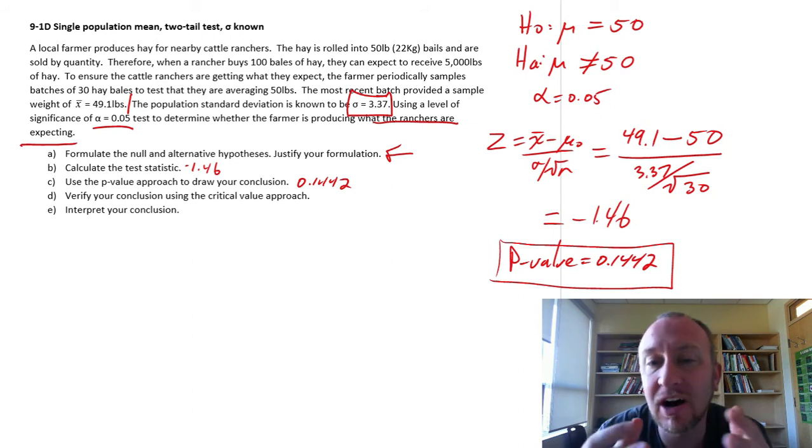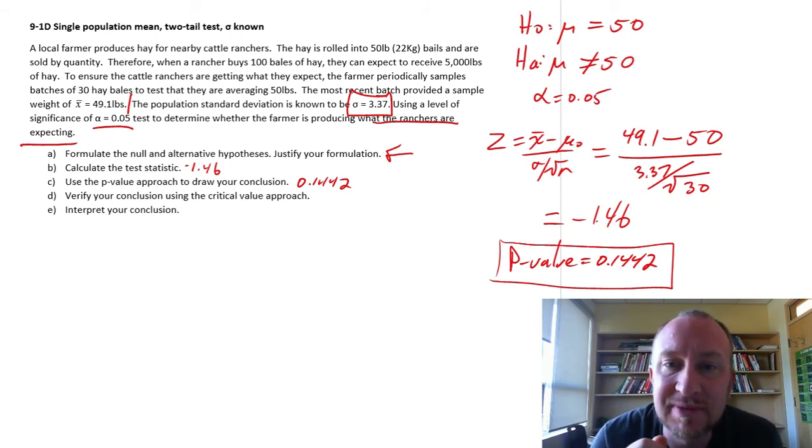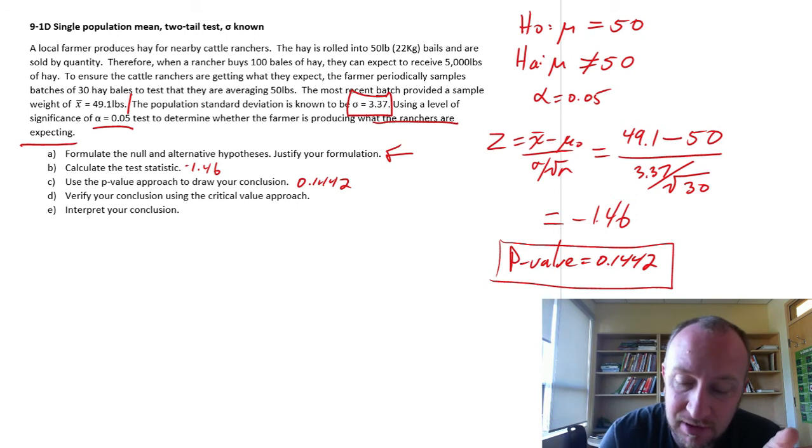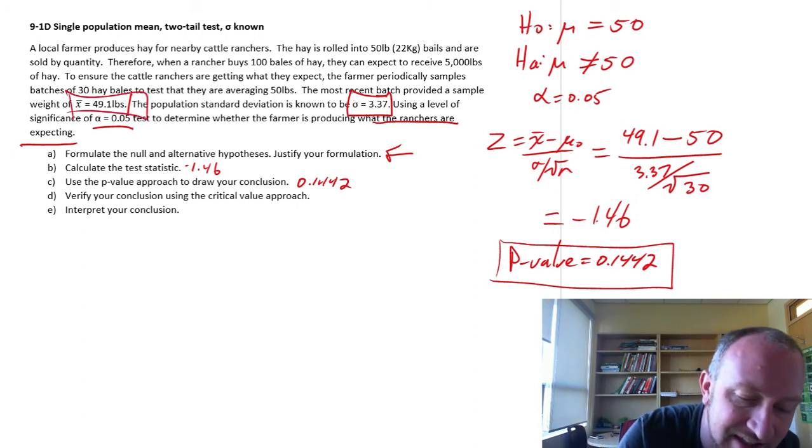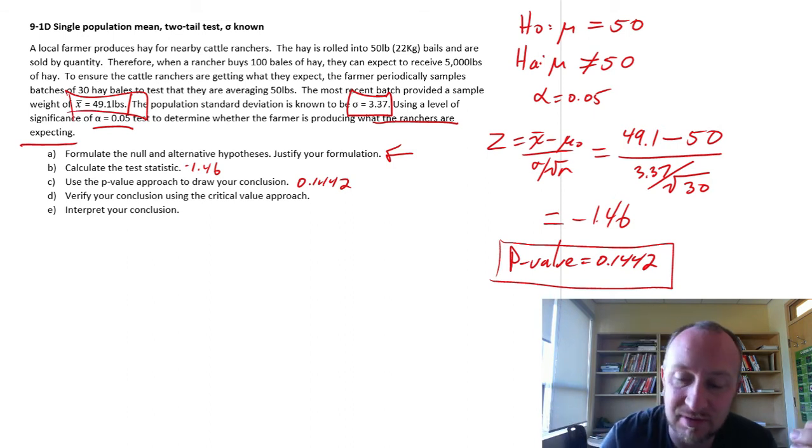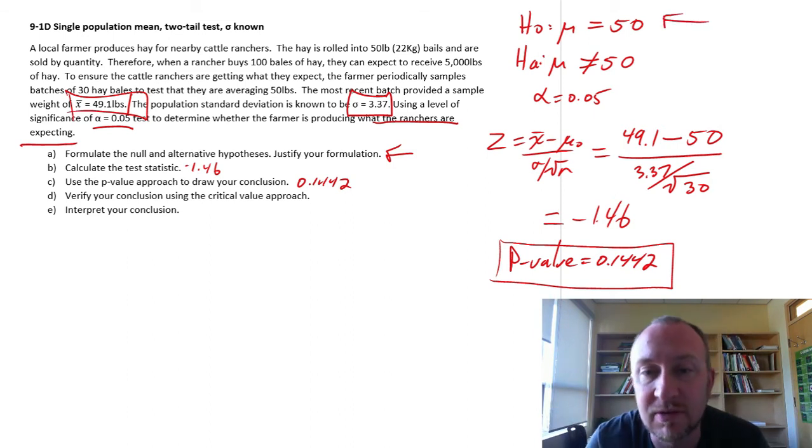It's quite possible to obtain that sample with a mean of 49.1. It's very possible that that sample came from a distribution with a mean of 50.